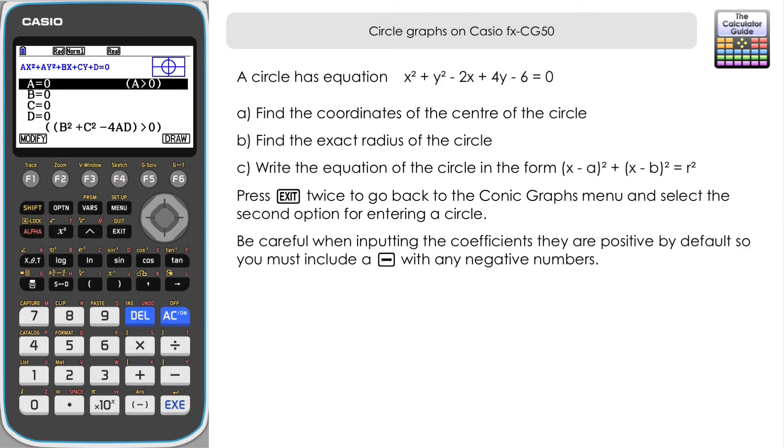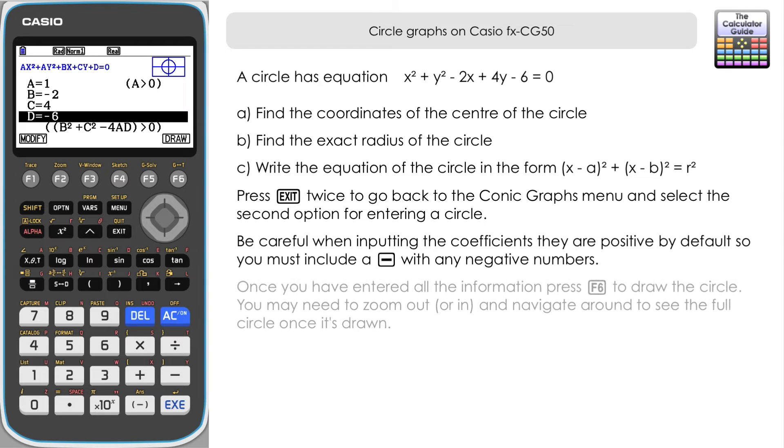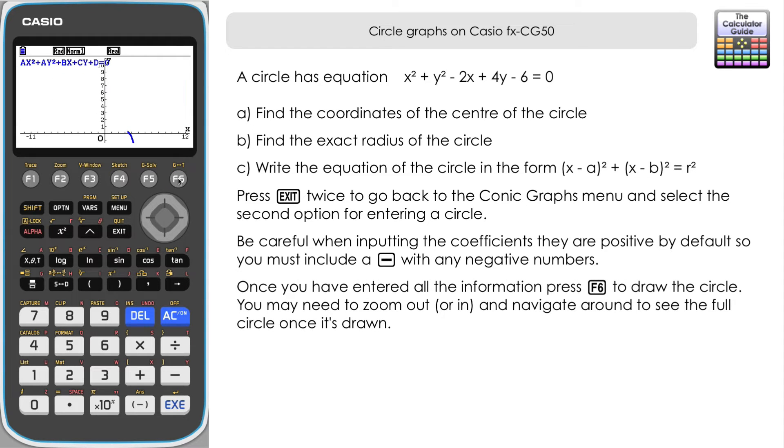Let's compare that to what we've got. We've got a must be 1 because we've got 1x squared and 1y squared. So a must be 1 here. We've got b, well that's negative 2 minus 2x. So we need to input that as minus 2. c is plus 4 so that we can just input 4. And then d is negative 6 minus 6 as our d. We've got everything in there. And so press execute and then draw to draw our circle.